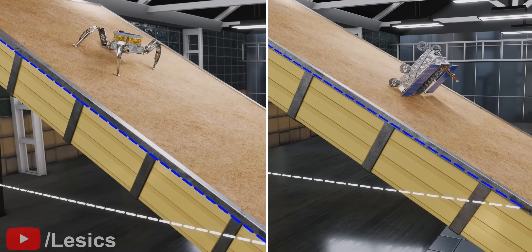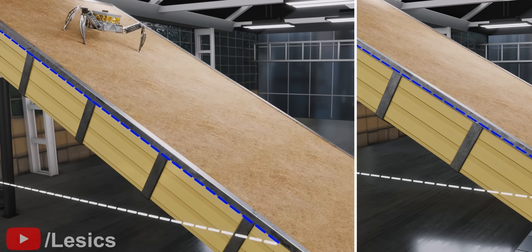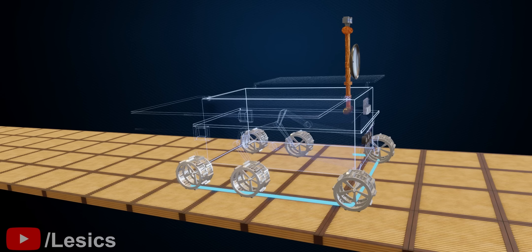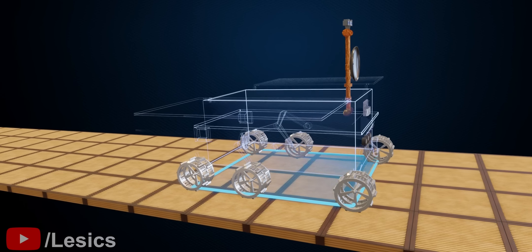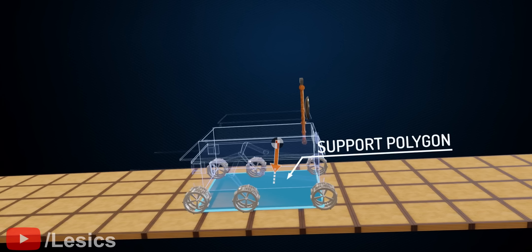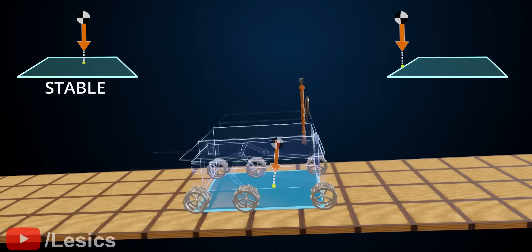Do you know why this happened? To answer this question, we should understand the concept of a support polygon in a rover. Let's draw a polygon using points of contact with the ground. This polygon is known as a support polygon. If the self-weight projection of the rover is within the support polygon, it means the rover is stable. Otherwise, the rover is unstable.